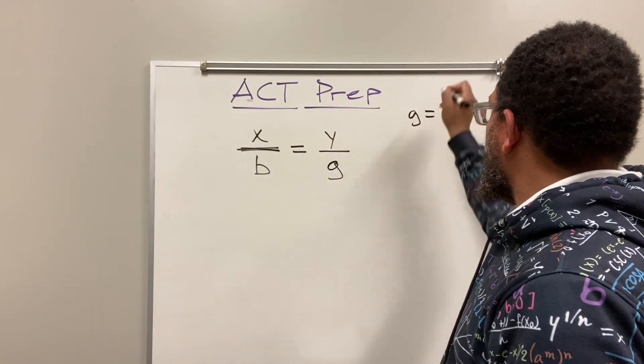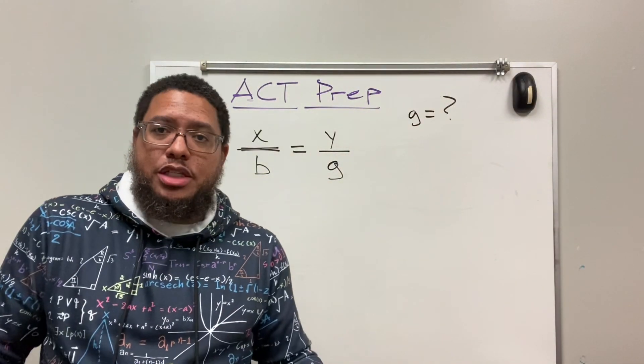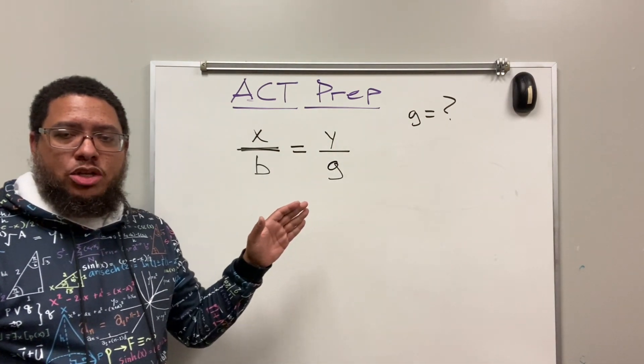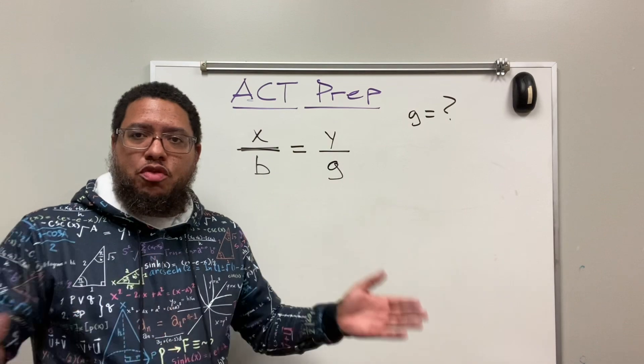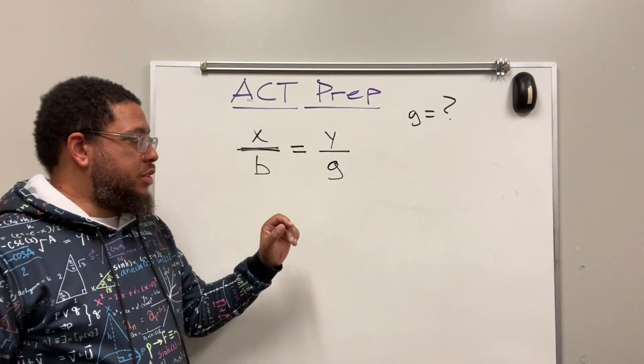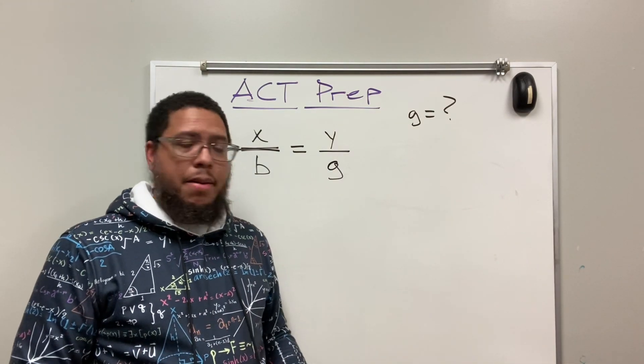That's what we got to do. G is equal to what? So basically we got to solve for G, but it's a literal equation. It's what we call a literal equation because we got a bunch of variables. So when we solve it, we're not going to have a numerical value, but we're going to have an expression that includes other variables. That's what we're going to have.